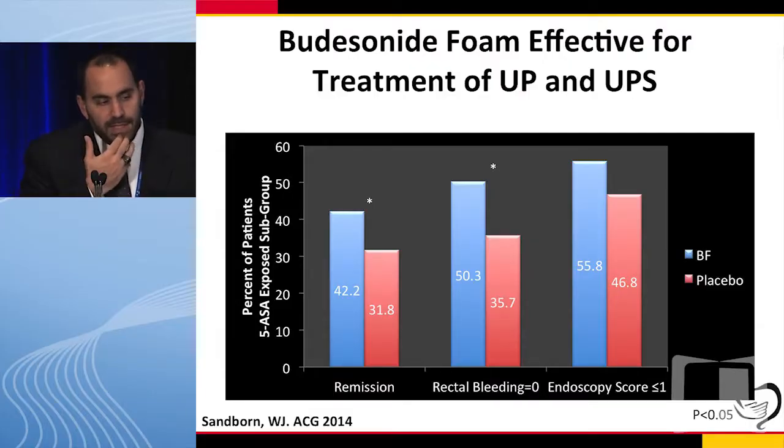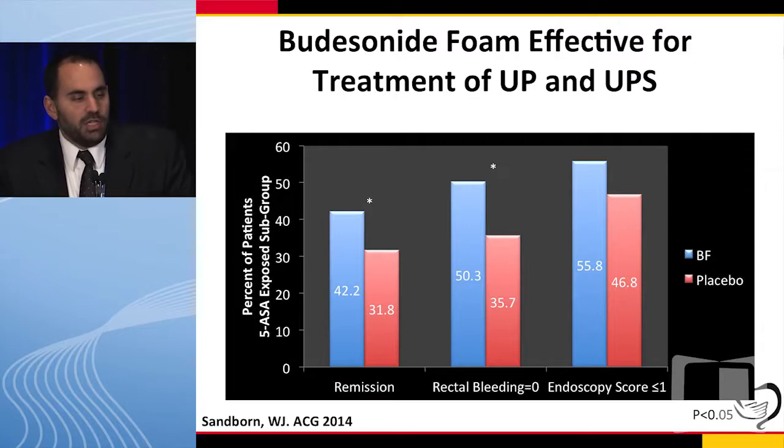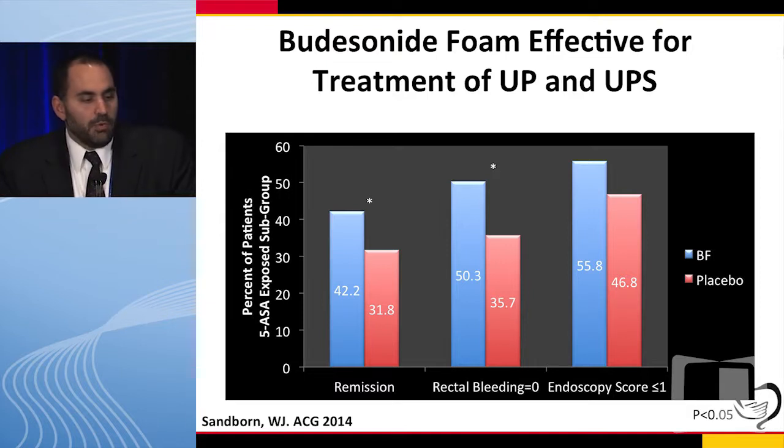Presented at ACG this fall, budesonide foam — which will be available in January — is being evaluated for the treatment of ulcerative proctitis and ulcerative proctosigmoiditis. Looking at remission on the far left, rectal bleeding in the middle, and endoscopy score on the far right, budesonide foam in blue was more effective than placebo in red — even in patients on concurrent 5-ASA — at inducing remission and eliminating rectal bleeding. However, it was not significant compared to placebo in inducing an endoscopy score less than or equal to one. So it definitely made patients feel better, even in the 5-ASA-treated patients.